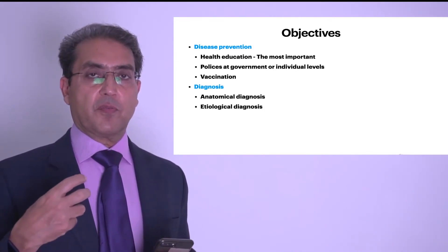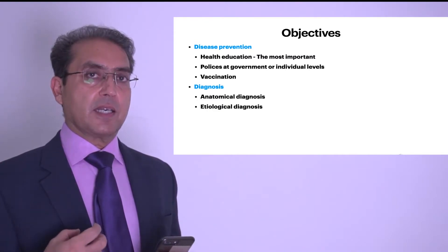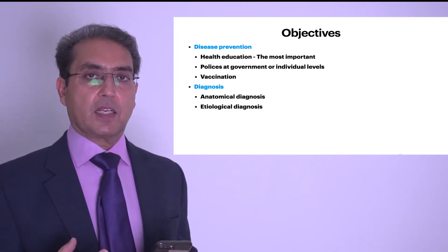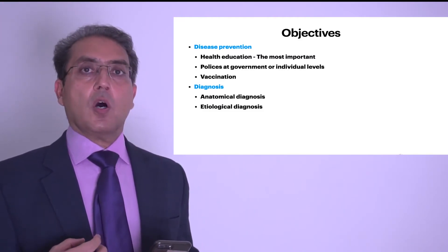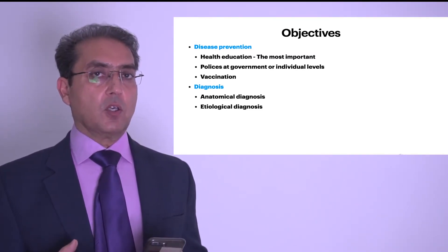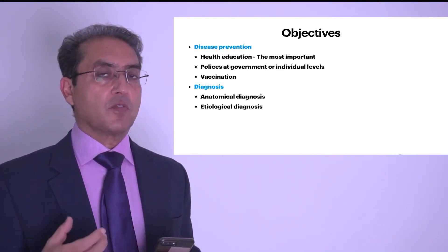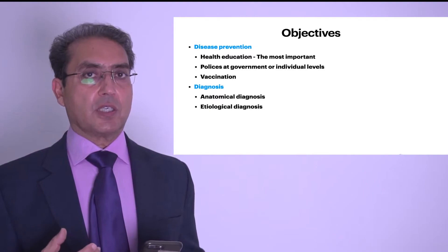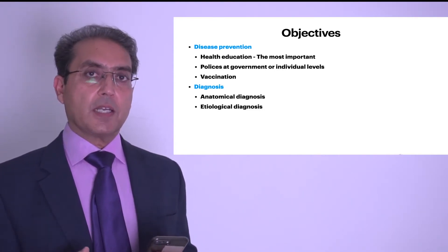If the patient becomes sick, the second objective is diagnosis. The diagnosis is first made at the anatomical level — identifying which organ system is involved, such as the liver, heart, kidneys, lungs, bones, or GI tract. Then an etiological diagnosis is made to determine the cause. For example, if the patient has liver disease, the etiological diagnosis might be chronic alcoholism or chronic hepatitis C.